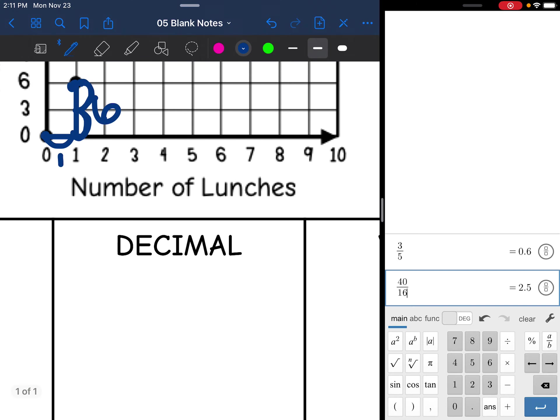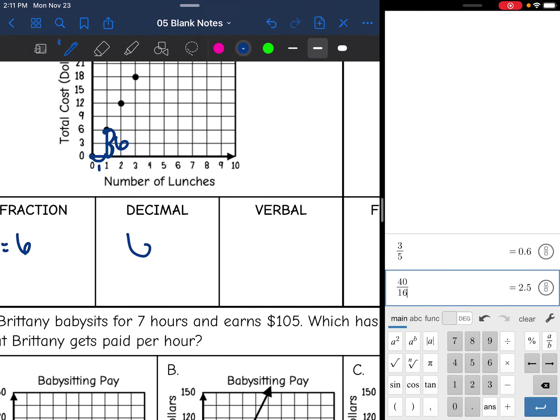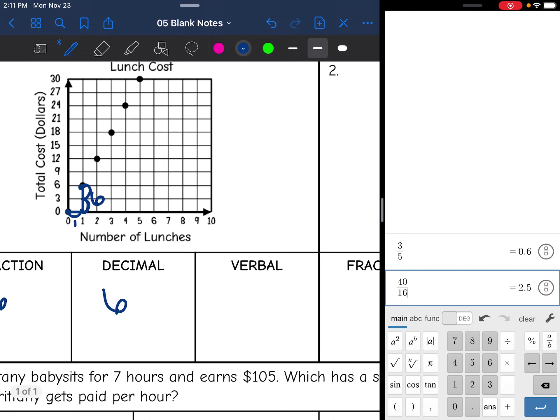That makes the decimal part of this easy. It is also 6. Let's talk about how this can verbally be represented, what this actually means. That 6 over 1 means that it is $6 per 1 lunch. Another way I could do this, you could pick a point on the graph, or you could just multiply the rate. I'm going to do both.